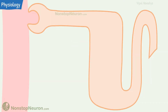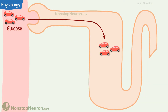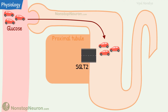Under physiological conditions, glucose is freely filtered at the glomerulus. Then almost all of the glucose is reabsorbed at the proximal tubule. 90% of this reabsorption occurs by sodium glucose co-transporter 2, or in short, SGLT2.